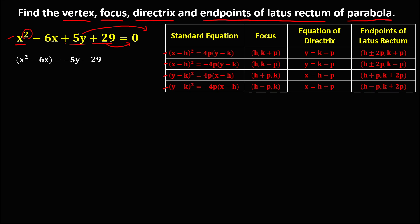Then we need to complete the square. In completing the square, take the coefficient of x, which is 6, divide by 2, then take the square. So 6 divided by 2 is 3, and 3 squared is 9. We need to add 9 on the left side and on the right side. So we have x squared minus 6x plus 9, and on the right side, negative 5y minus 29 plus 9.